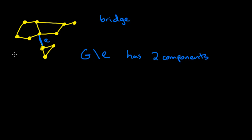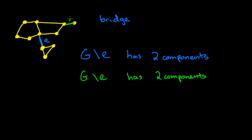Similarly, if we try this with a different edge, maybe this one over here — so the original graph without that edge, including the blue edge but without the green edge — it will also have two components. We notice that if we remove either edge E or this edge, maybe I'll call it E prime so it's clear it's a different one, either one of these edges would disconnect the graph.